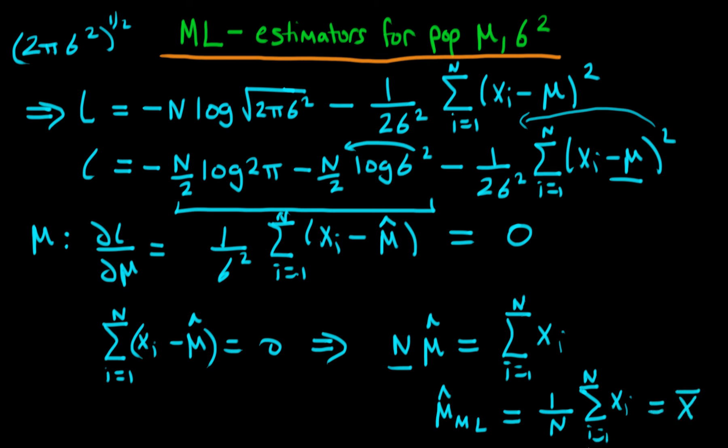So the maximum likelihood estimator for the population parameter mu turns out in fact just to be the ordinary sample mean.